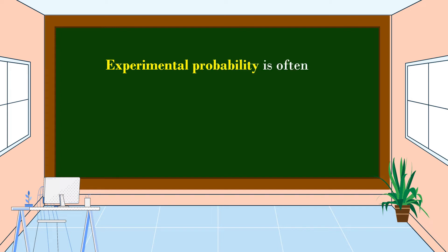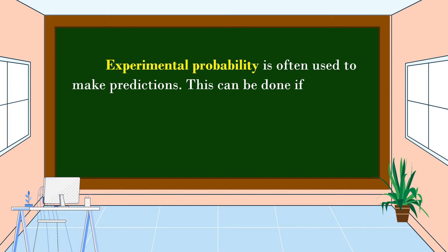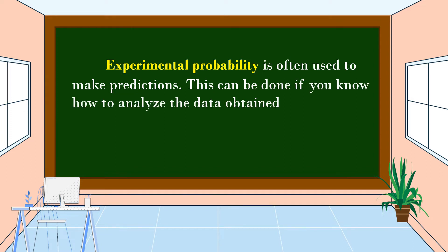Experimental probability is often used to make predictions. This can be done if you know how to analyze the data obtained from the experiments.